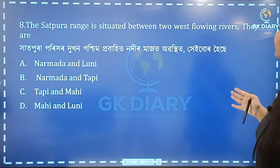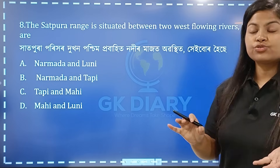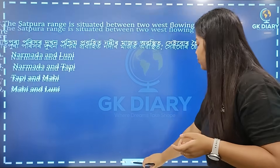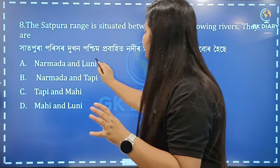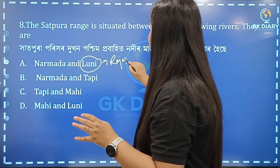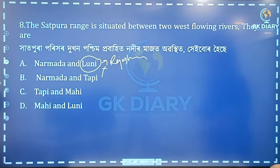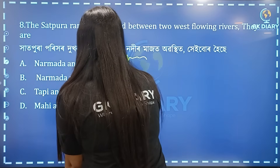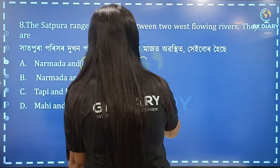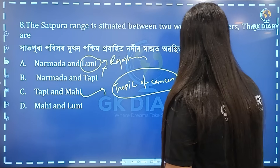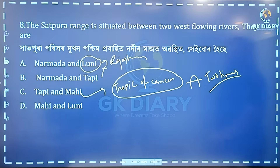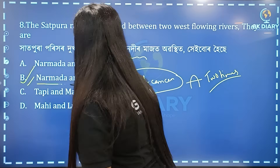The Satpura Range is situated between two west-flowing rivers. The options are: Narmada and Luni, Narmada and Tapi, Tapi and Mahi, or Mahi and Luni. The Mahi River is important — it crosses the Tropic of Cancer. The correct option is Option B: Narmada and Tapi.